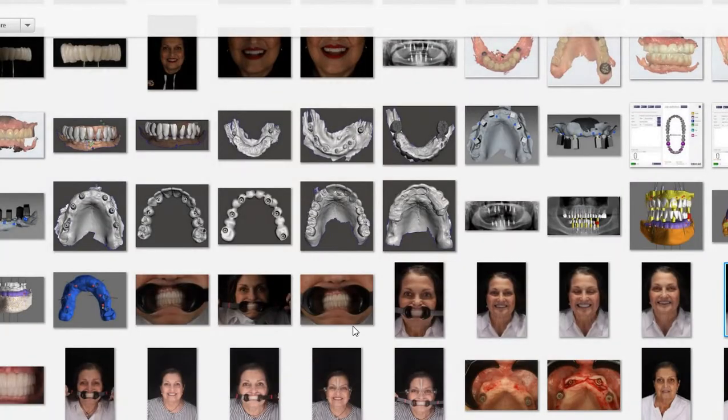We also like to take a retracted view—so that same photo, retracted, very similar to the situation. I can remount her upper and lower arch in Exocad, put her on a pendant in an articulator to make sure I get the right incisal edge position and use Smile Creator to design her smile.